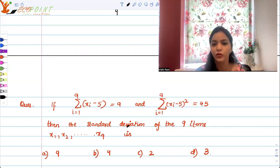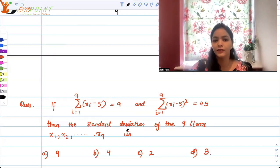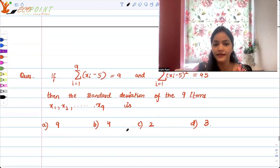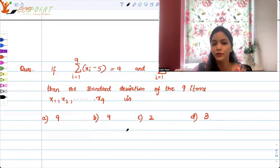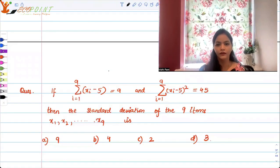Then the standard deviation of the nine items x1, x2 to x9 is: a) 9, b) 4, c) 2, or d) 3. I'm sure you guys should be able to do this, so you must pause and try it out yourself right now.